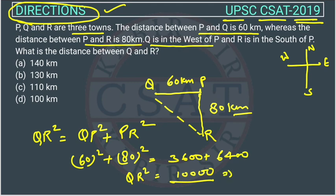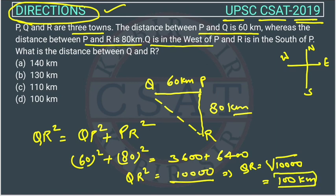Now, QR will be the square root of 10000, and the square root of 10000 is 100. So the distance between Q and R is 100 kilometers. The answer is option D — option D is the correct answer.